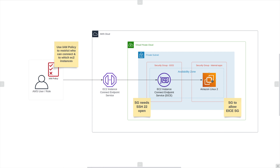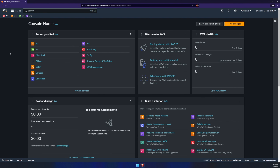Even once we build this EC2 instance connect endpoint, it's only going to allow our role to connect to the instance. Our instance still will not be able to access the internet — something to keep in mind. With that being said, let's jump into our AWS console and start to build.